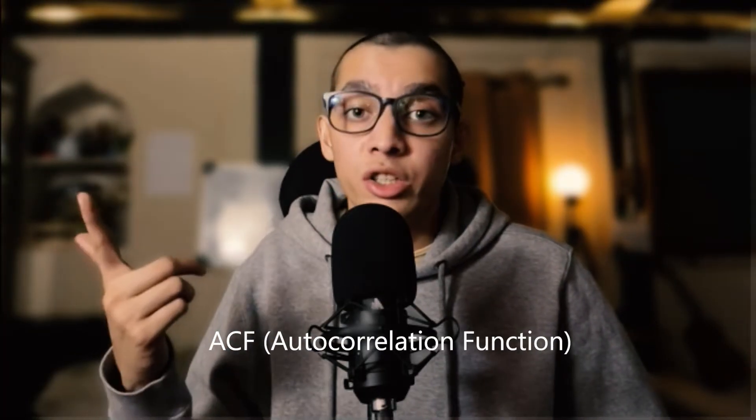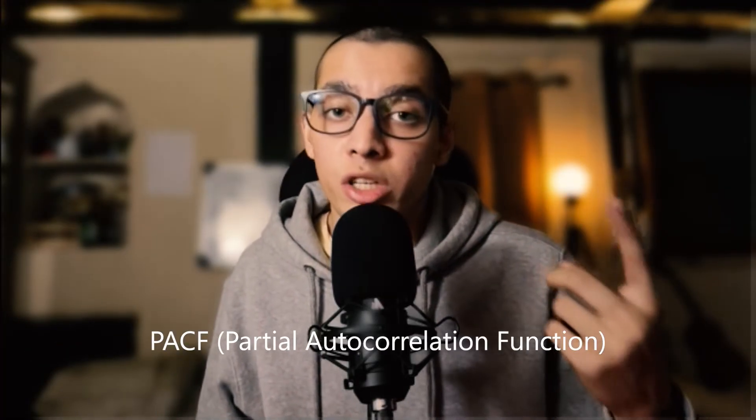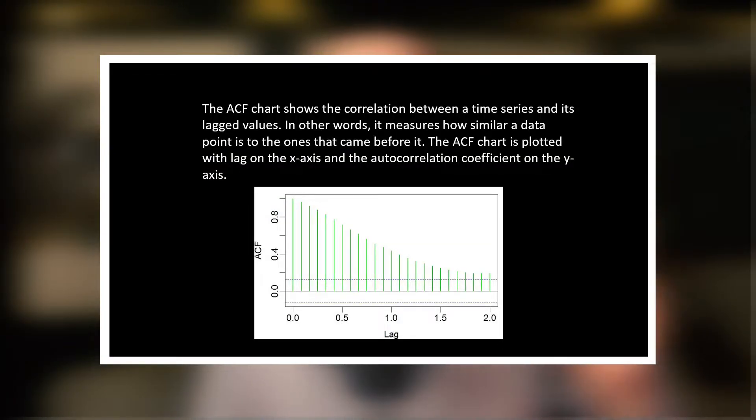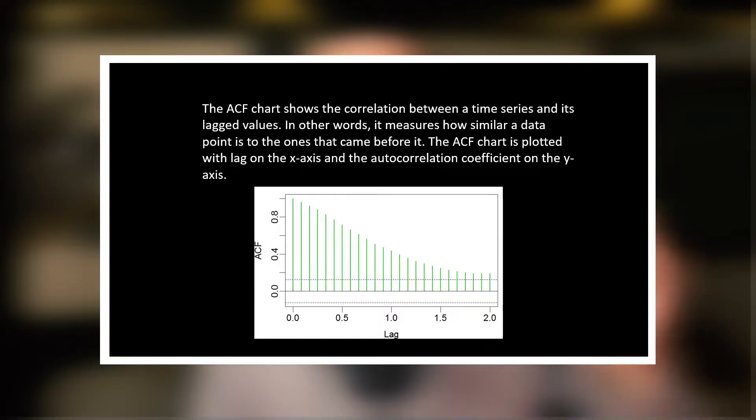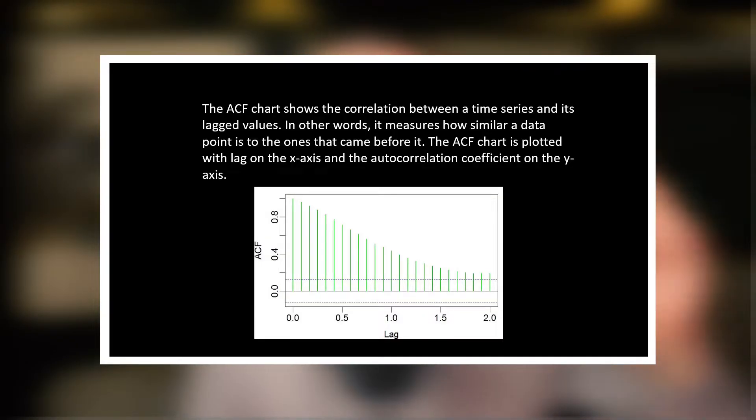To find the P and Q values for ARIMA, we look at two charts. The first is the ACF chart, also called the Autocorrelation Function chart. The second is the PACF chart, which is the Partial Autocorrelation Function chart. The ACF chart shows the correlation between a time series and its lag values — it measures how similar a data point is to the ones that came before it. It is plotted with lag on the x-axis and the correlation coefficient on the y-axis.